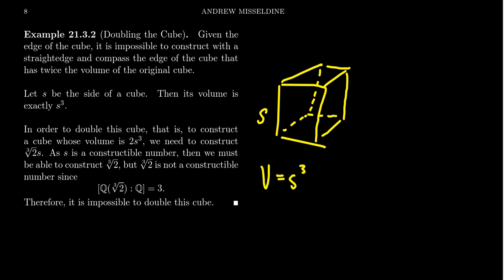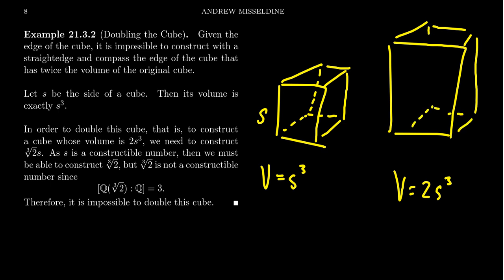If we were to construct a cube whose volume is twice that, the volume here is going to be 2s³. We then want to draw this larger cube like so. What would be the side lengths of that cube?